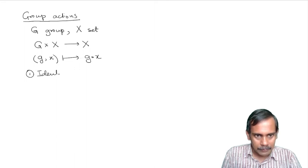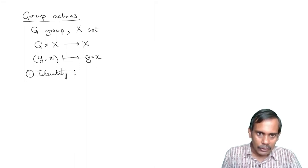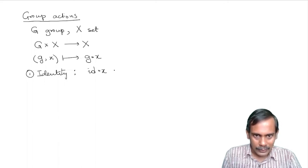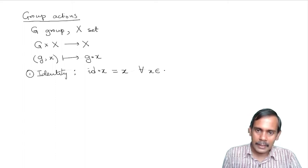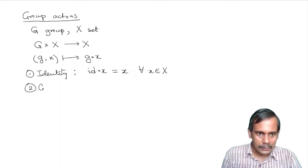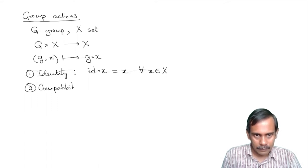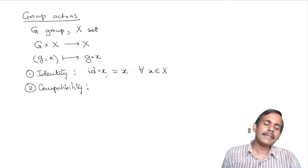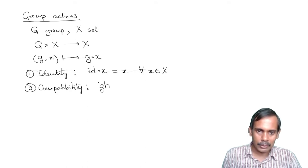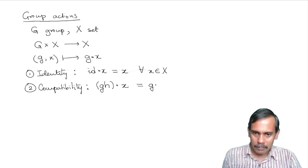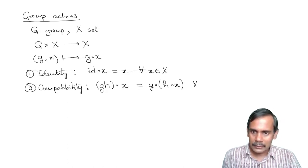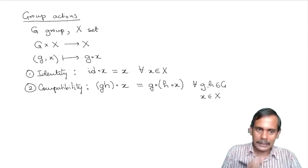The first axiom is the identity axiom: if you take the identity element of G and act on an element x of X, then it equals x — the identity element does nothing. The second axiom is the compatibility axiom: it says the action is compatible with the group structure. If you multiply g and h together and apply the result to x, that is the same as making g act on the result of applying h to x. This looks like associativity, except g and h are in G but x is in the set X. That's the definition of a group action.